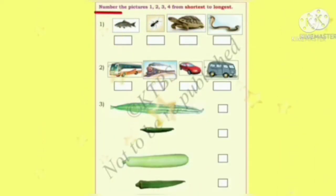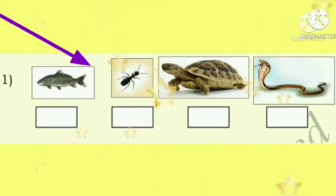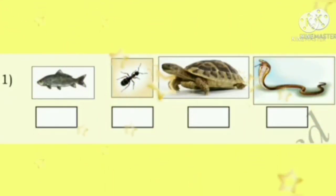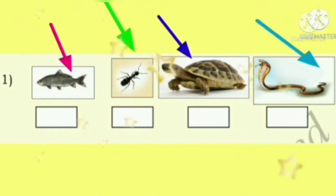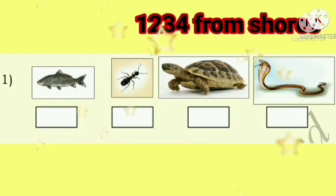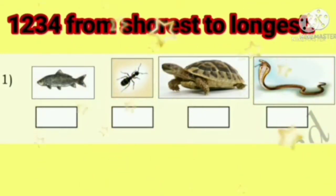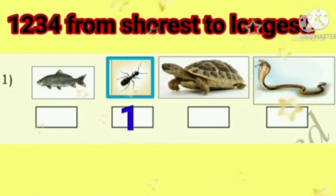We have to number the pictures from shortest to longest — one, two, three, four. Here, they have given four pictures: fish, hand, tortoise, and snake. We have to give numbers from one to four, shortest to longest. Which one is shortest? This hand is the shortest, so we have to write number one. Next, the fish is more in length, so we have to write number two.